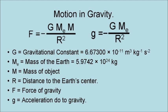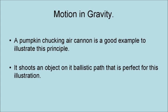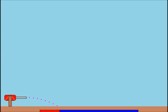A pumpkin-chunking air cannon is a good example to illustrate this principle because it shoots an object on a ballistic path that is perfect for this illustration. If you fire a pumpkin-chunking air cannon horizontally, the more power you put behind the shot, the further the pumpkin goes.